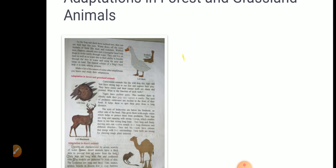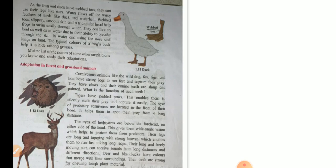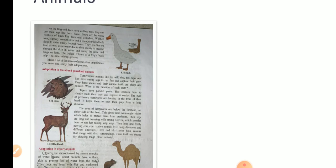They have claws and canine teeth that are sharp and pointed. What is the function of such teeth? They are used to tear the flesh apart. The tigers have padded paws. This enables them to silently stalk their prey and capture it easily. Stalk means to follow them quietly so that they can catch their prey easily.